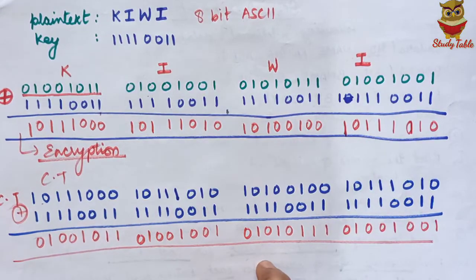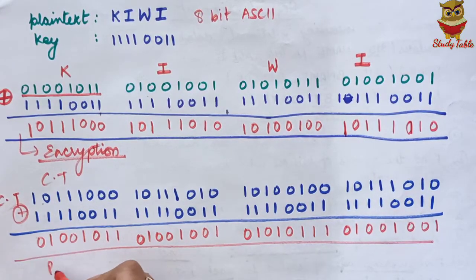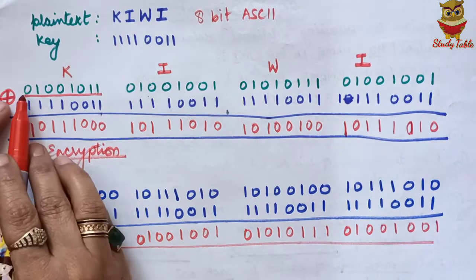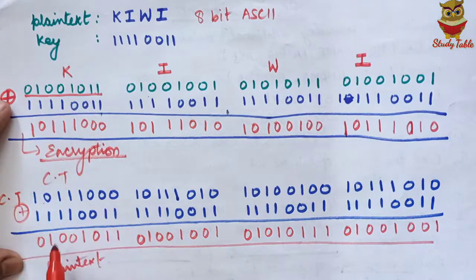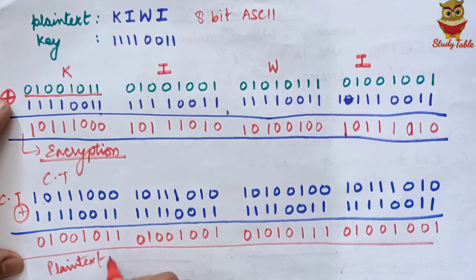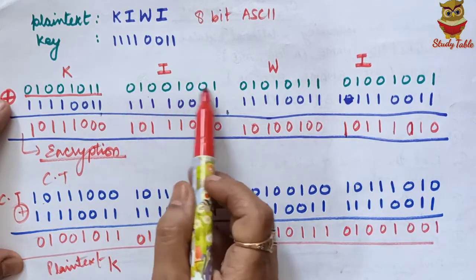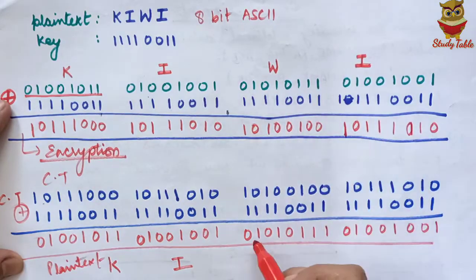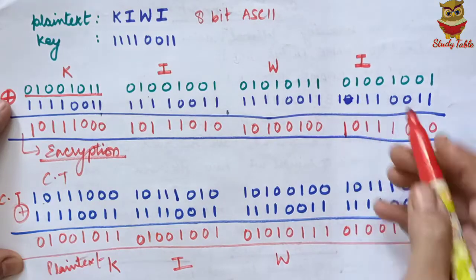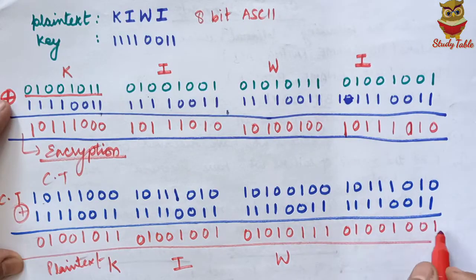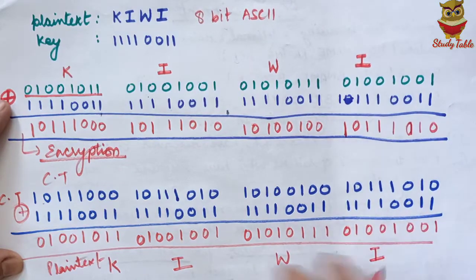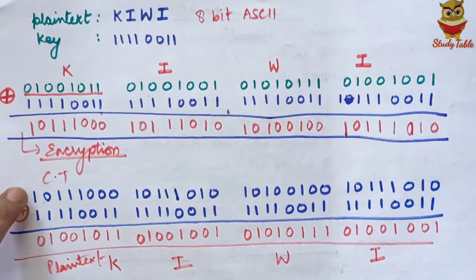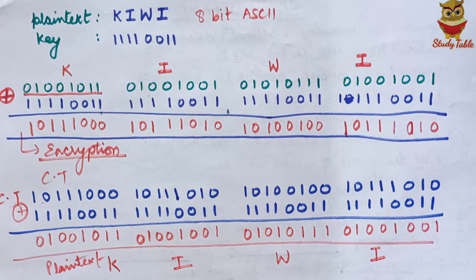The cipher text is now converted back to plain text. Checking the bits: 01001011 is K, 01001001 is I, 01010111 is W, and 01001001 is I — all the original plain text values are recovered. The cipher text has been successfully decrypted back to plain text. This is the XOR cipher.